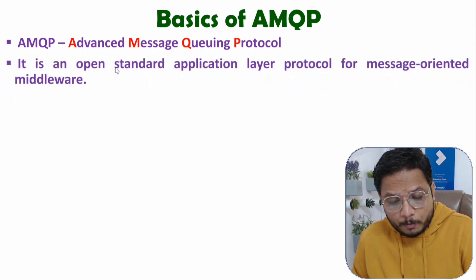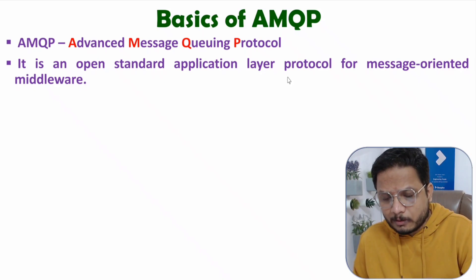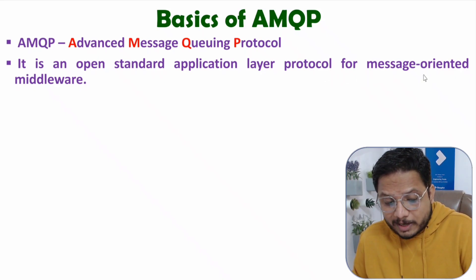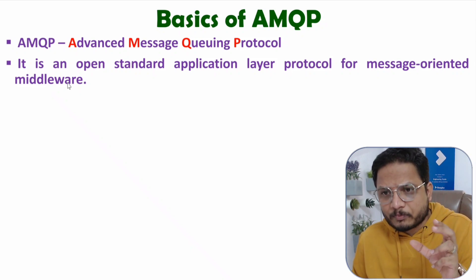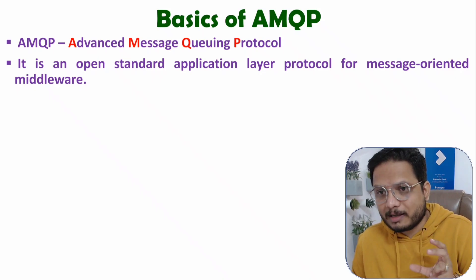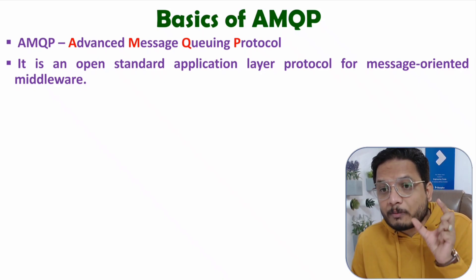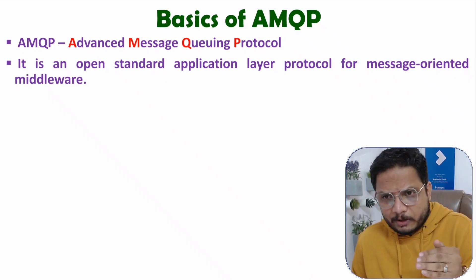AMQP is an open standard application layer protocol for message-oriented middleware, functioning as message-oriented middleware. It is an advanced protocol for message queuing and is used in banking transactions in the majority of cases.